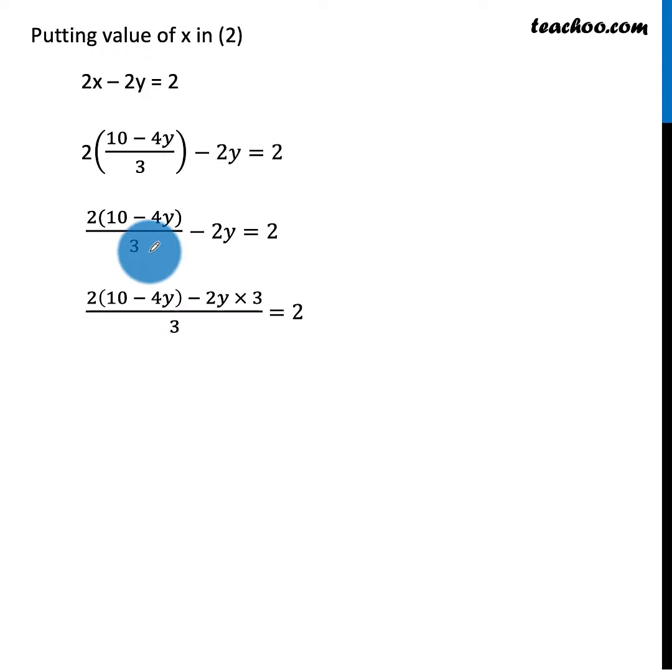I will take LCM. You can do two things. You can multiply both sides by 3. So, 3 times 3 will cancel here. This will be 6y. This will be 6.